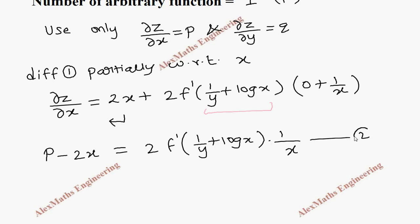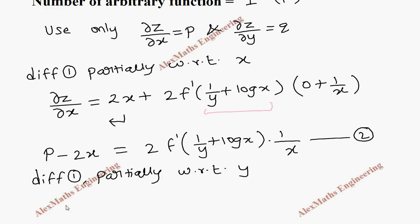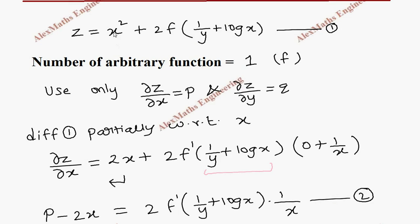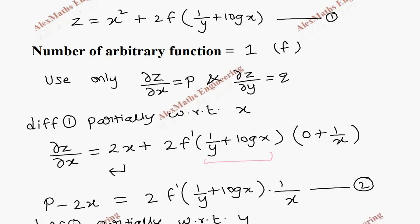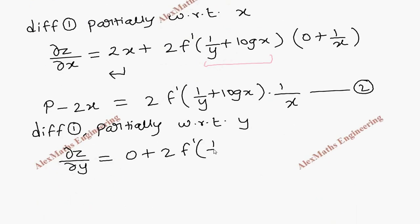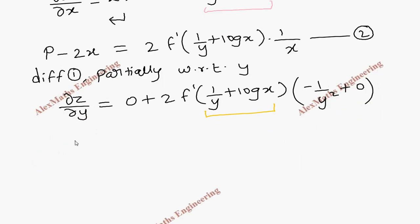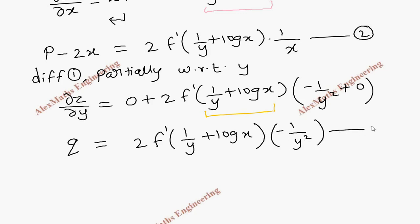In the same way, we take the first expression again and differentiate partially with respect to y. So dou z by dou y: the first term x squared is constant since we are doing partial derivative with respect to y, so that term becomes zero. 2 is written as is, f derivative is f dash, the inner function is written as is, then by the chain rule: the derivative of 1/y is minus 1/y squared, and since x is constant, log x is also constant so it gives zero. Rearranging: q equals 2 f dash of (1/y + log x) into minus 1/y squared. This is our third expression.